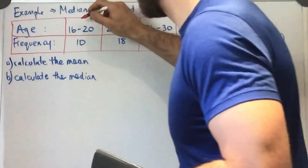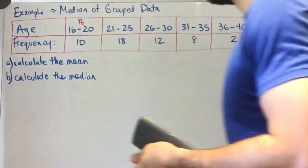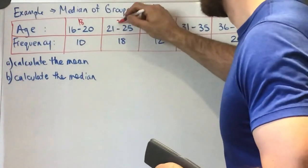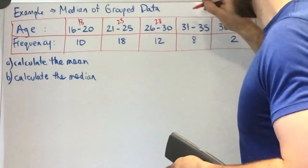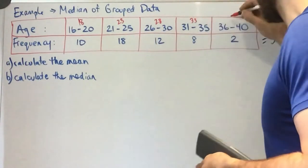So in between 16 and 20, our midpoint would be 18. Between 20 and 25, our midpoint would be 23, and we'll kind of continue that on.